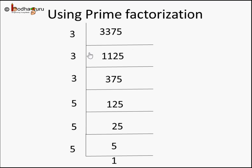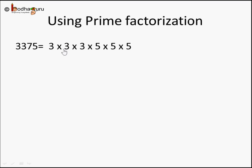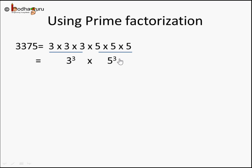Whatever we have on this side, we write it out and bundle into groups of 3 of the same number. So 3 into 3 into 3 forms one group, and 5 into 5 into 5 forms another group. We can write 3 into 3 into 3 as 3 cubed, and 5 into 5 into 5 as 5 cubed.